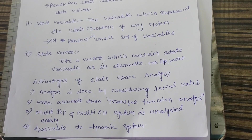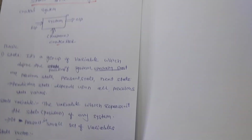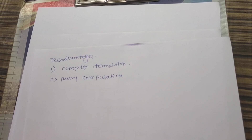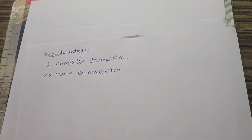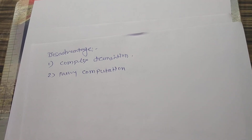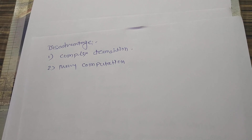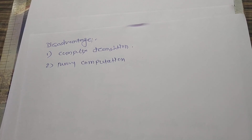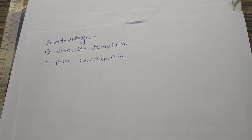These are the advantages of state space analysis. But it also has some disadvantages. The first disadvantage is that the system is complex in terms of transients. As we discussed, state space analysis is efficient for multiple inputs and multiple outputs, but as the number of states increases, the number of variables increases, and therefore the transients become more complex. The second disadvantage is that it involves more computation. Since the variables and states are more numerous, the computations increase, and it takes more time to analyze and define the system. Despite these disadvantages, the advantages of state space analysis are greater, and that is why we need to study it.